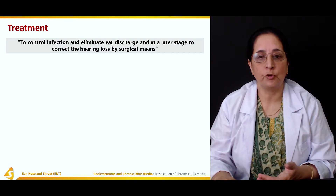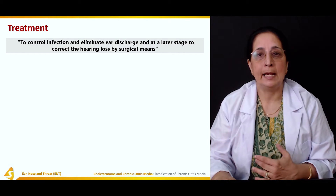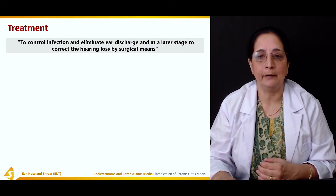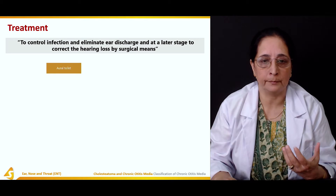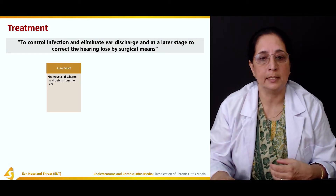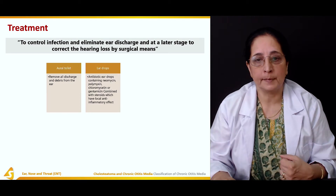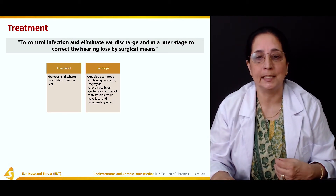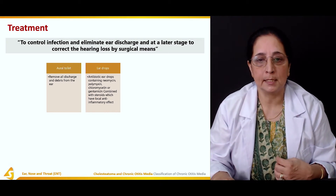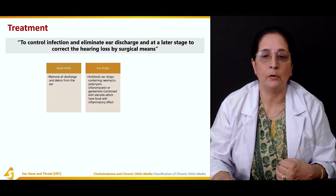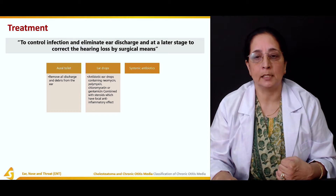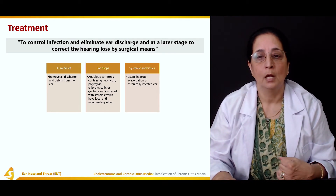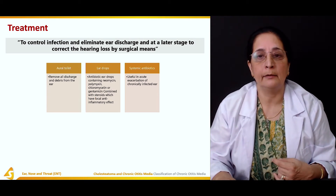Treatment aims to control infection, eliminate ear discharge, and at a later stage to correct hearing loss by surgical means. Aural toilet involves cleaning the ear and removing all discharge and debris. Ear drops are usually antibiotic drops containing neomycin, polymyxin, chloramphenicol, or gentamicin, combined with steroids which have a local anti-inflammatory effect. Systemic antibiotics are useful in acute exacerbation of the chronically infected ear.